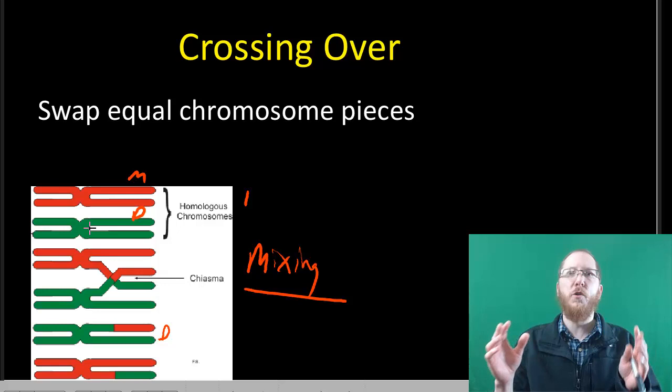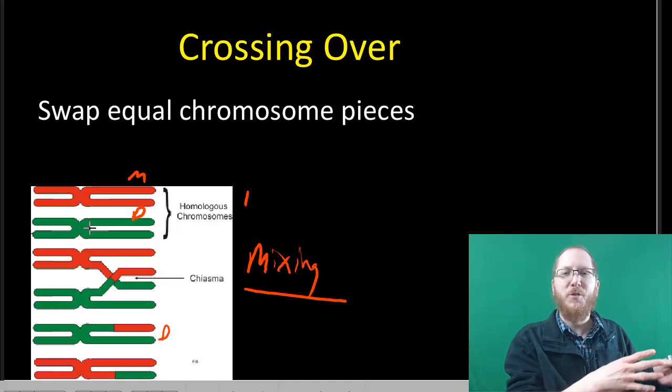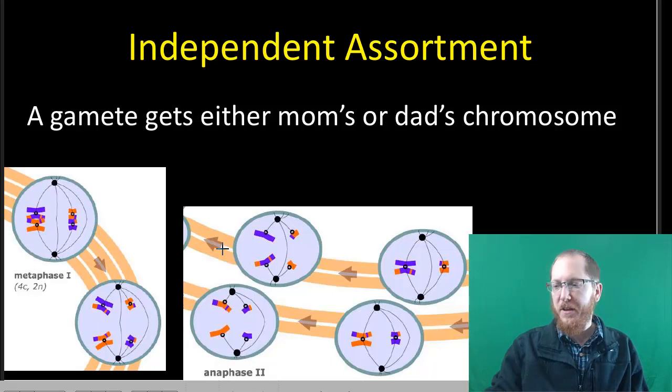So crossing over will cause a huge amount of diversity because you don't just get mom's traits or dad's traits. You can get on a single chromosome a mix. Now, after this, when we line up the chromosomes, especially during this first metaphase where we line up the homologues.